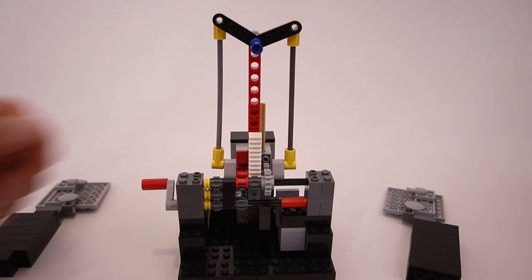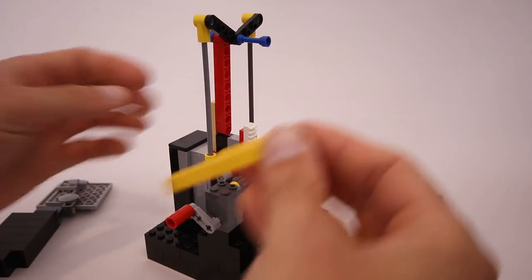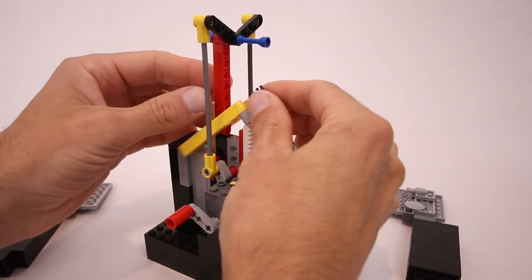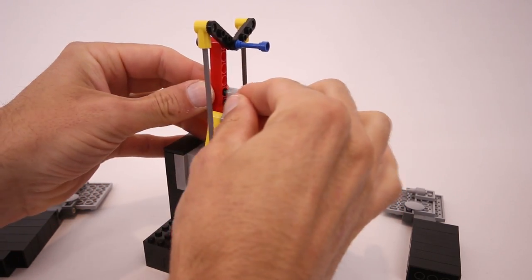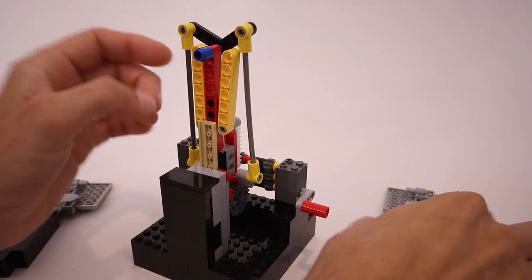And the last piece of motion that we need to add is the opening and closing of the hands, which is achieved using a simple set of lift arms, that are connected between the main support here, and each of the hands.